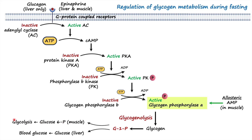Calcium is also considered an allosteric regulator of glycogenolysis. During intense exercise, when muscles are contracting, calcium is released from the sarcoplasmic reticulum. This increased calcium level activates phosphorylase b kinase, which subsequently activates glycogen phosphorylase to upregulate glycogenolysis and synthesize ATP. This energy is then utilized by the exercising muscle, meaning calcium plays a very important role in providing energy during muscle contraction.